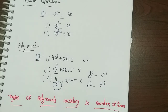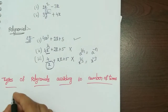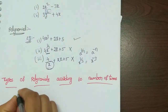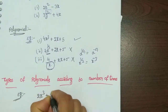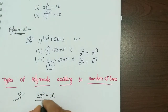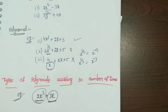Now, types of polynomials are classified by number of terms. Polynomials are also divided based on degree. Let's look at an example: 2x³ plus 3x. The terms are 2x³ and 3x, so there are 2 terms. Let's understand how many terms define each type of polynomial.